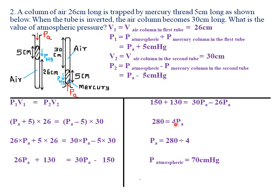Dividing both sides by 4: Pa = 280 ÷ 4 = 70 cmHg. Therefore the atmospheric pressure is 70 centimeters of mercury.